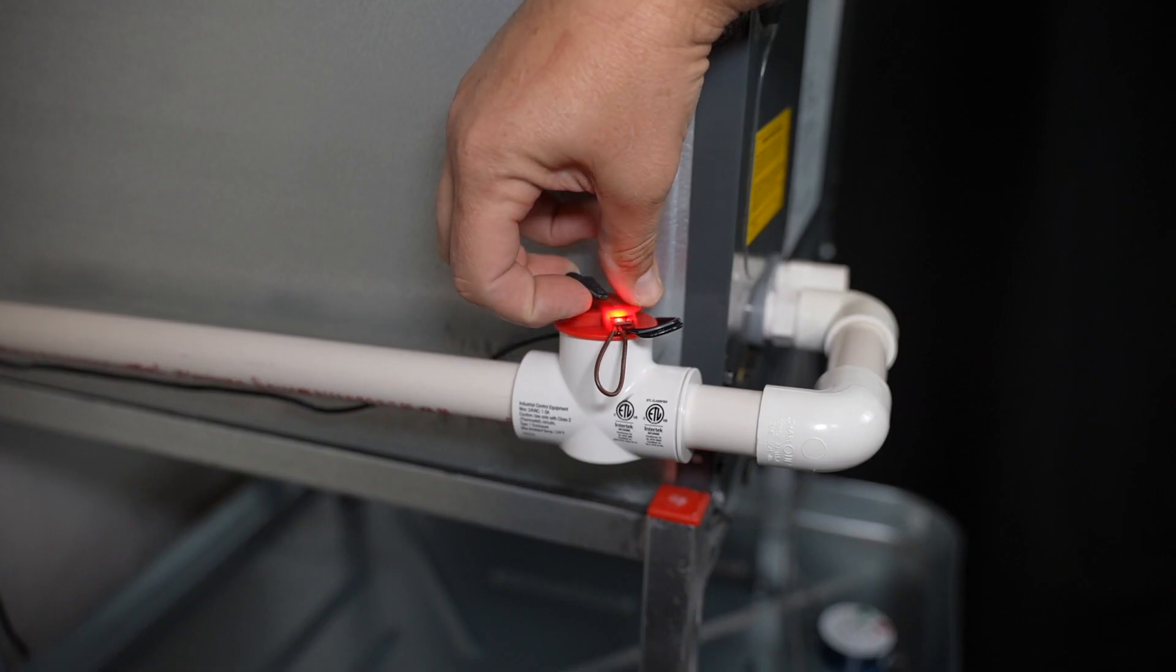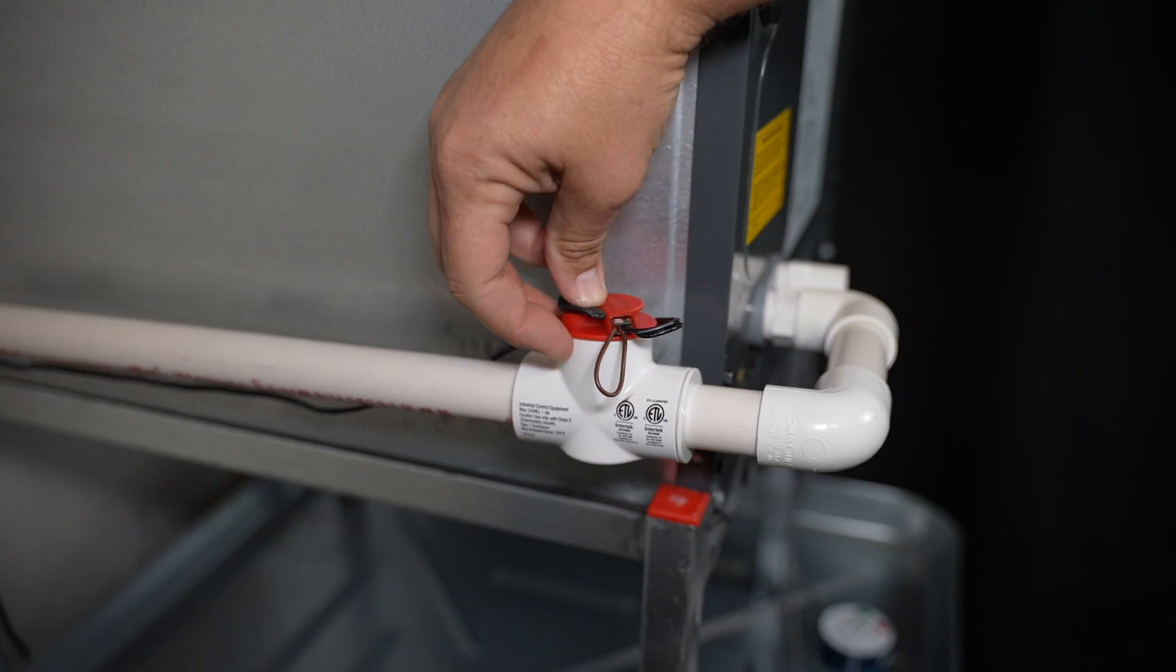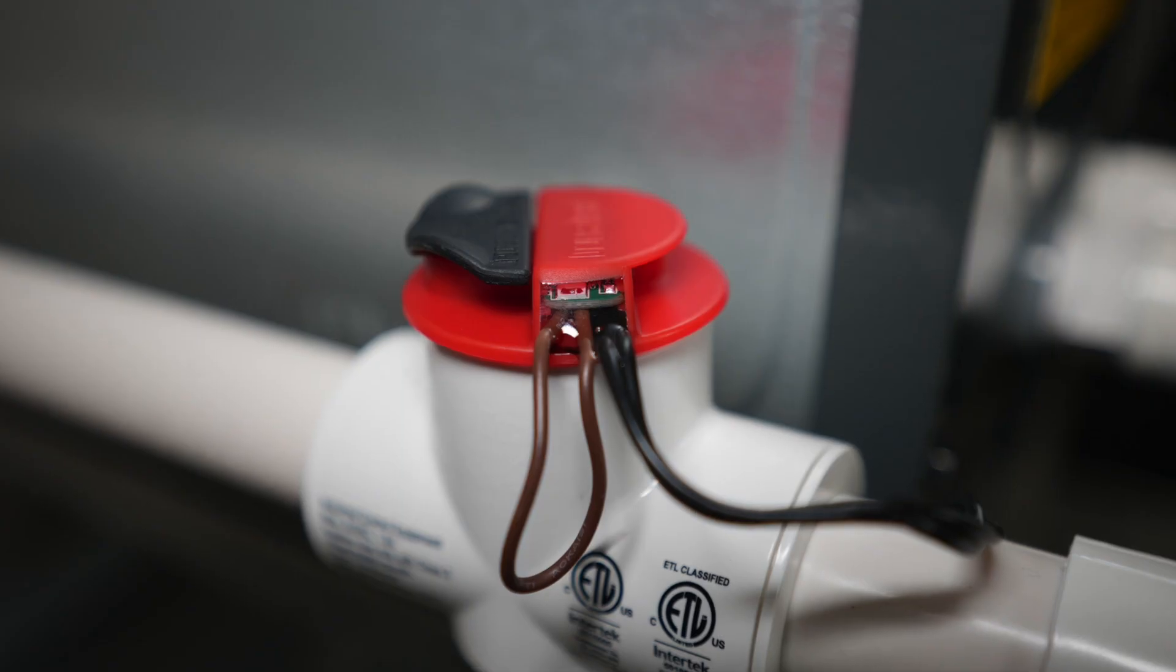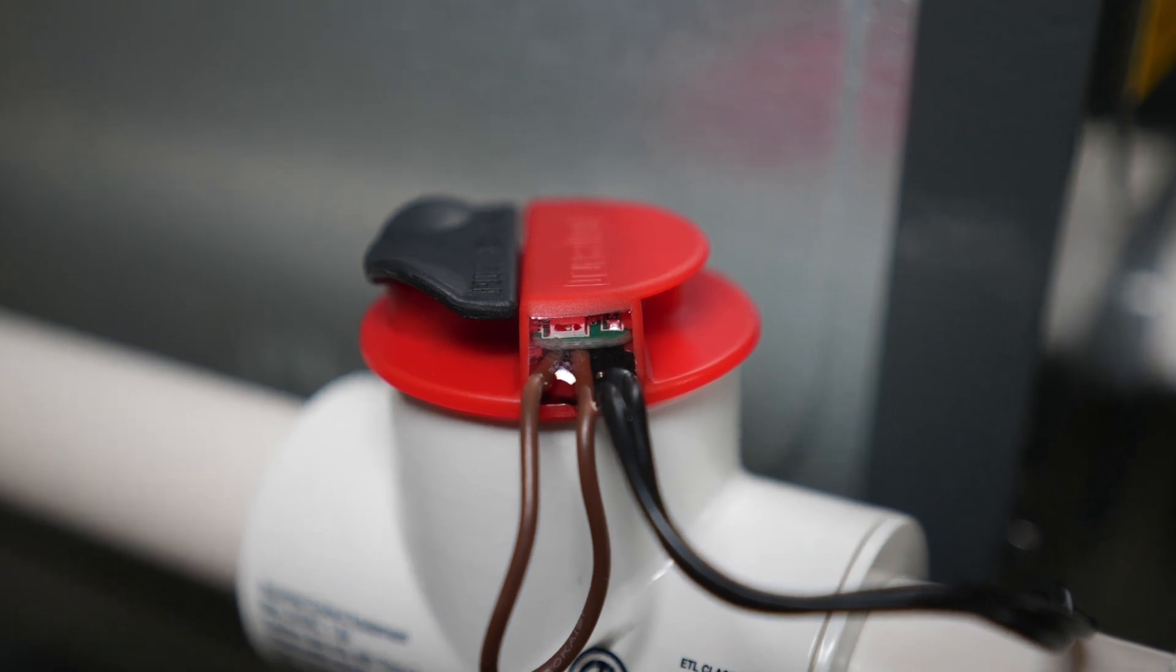The pull lever makes it easy to test functionality. The LED activates when the condensate line is blocked. It has built-in protection against power surges.